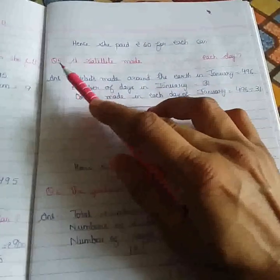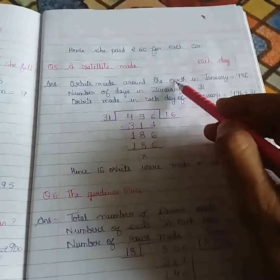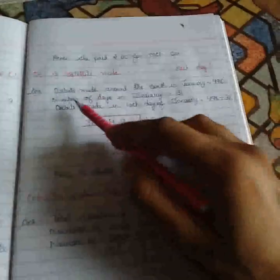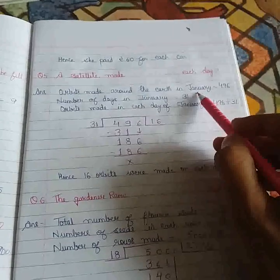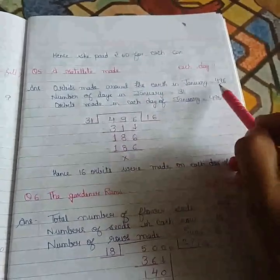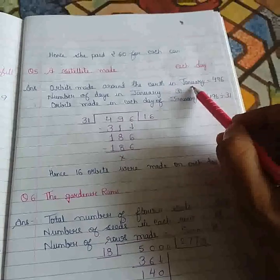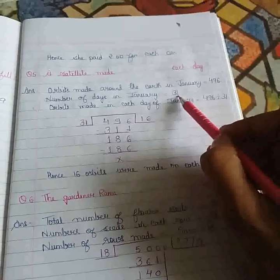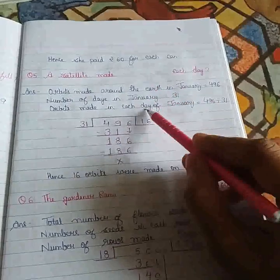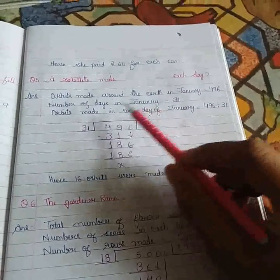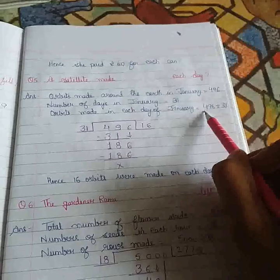Now this is question number 5. Here it is given that a satellite is making rounds around the earth. In the month of January, this satellite is making 496 orbits or rounds. Now we know that January month has 31 days. The question is asking how many orbits or rounds the satellite is taking in 1 day in the month of January. So again we have to divide here, 496 divided by 31.